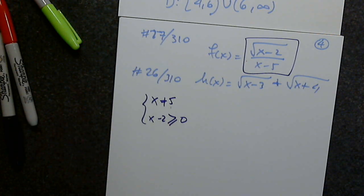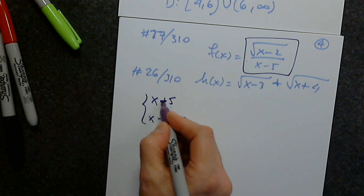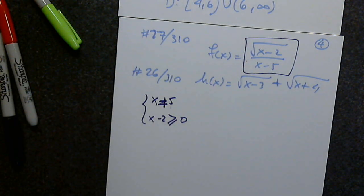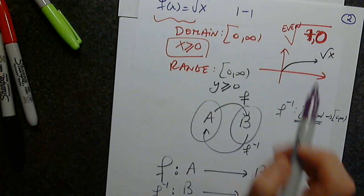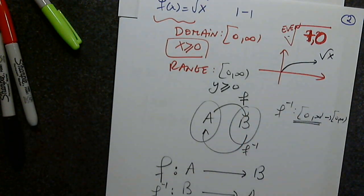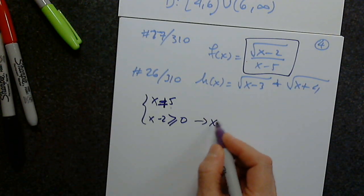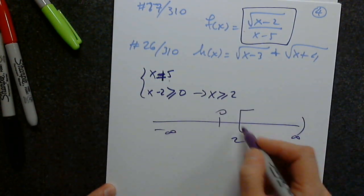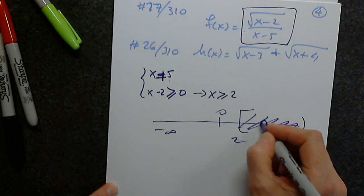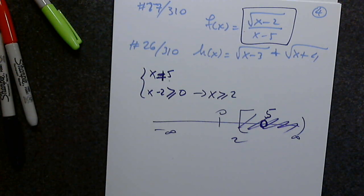The numerator can be 0, but since I have the square root, the quantity must be ≥ 0. So from x - 2 ≥ 0, I get x ≥ 2. I put it on the real line: x ≥ 2, but I have to remove 5. So the domain is [2, 5) ∪ (5, ∞).